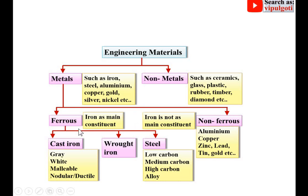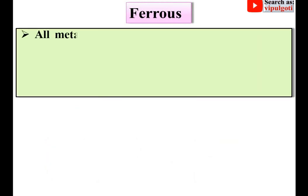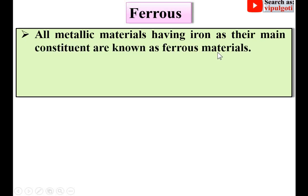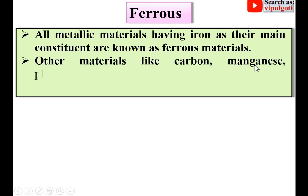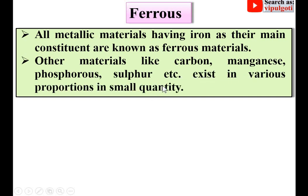Now let us look at ferrous and non-ferrous metals. All metallic materials having iron as their main constituent are known as ferrous materials. Other materials like carbon, manganese, phosphorus, sulfur, etc., exist in various proportions in very small quantities in ferrous metals.